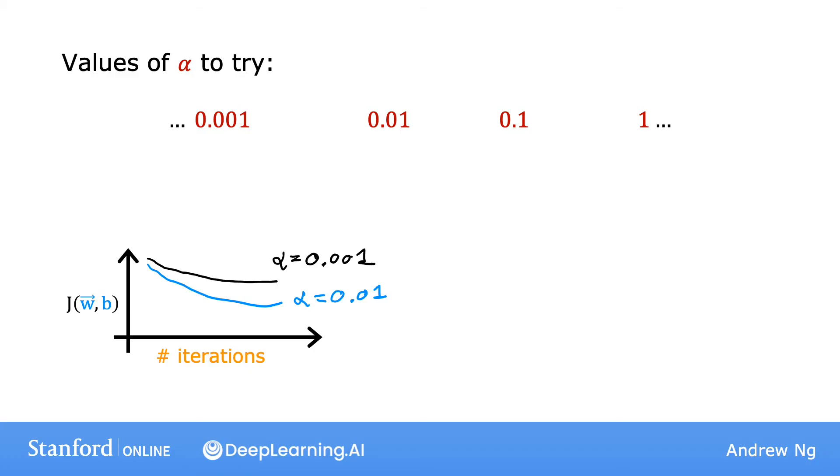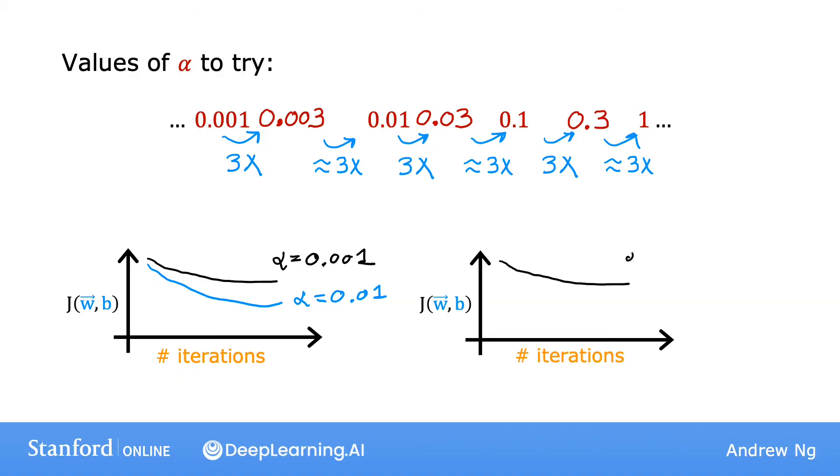In fact, what I actually do is try a range of values like this. After trying 0.001, I'll then increase the learning rate 3-fold to 0.003, and after that I'll try 0.01, which is again about 3 times as large. So these are roughly trying out gradient descent with each value of alpha being roughly 3 times bigger than the previous value. I'll try a range of values until I've found a value that's too small, and then also make sure I've found a value that's too large. And I'll slowly try to pick the largest possible learning rate, or just something slightly smaller than the largest reasonable value that I've found. When I do that, it usually gives me a good learning rate for my model.